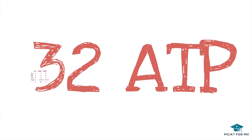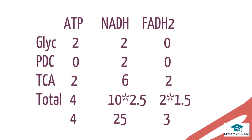Breaking down how we get each value: in glycolysis, we get 2 ATP. In the PDC, we get 2 NADH. In the TCA cycle, we get 2 ATP, 6 NADH, and 2 FADH2. So in total, we get 4 ATP, 10 NADH, and 2 FADH2. With each NADH yielding 2.5 ATP and each FADH2 yielding 1.5 ATP, that's how we arrive at a total of 32 ATP.